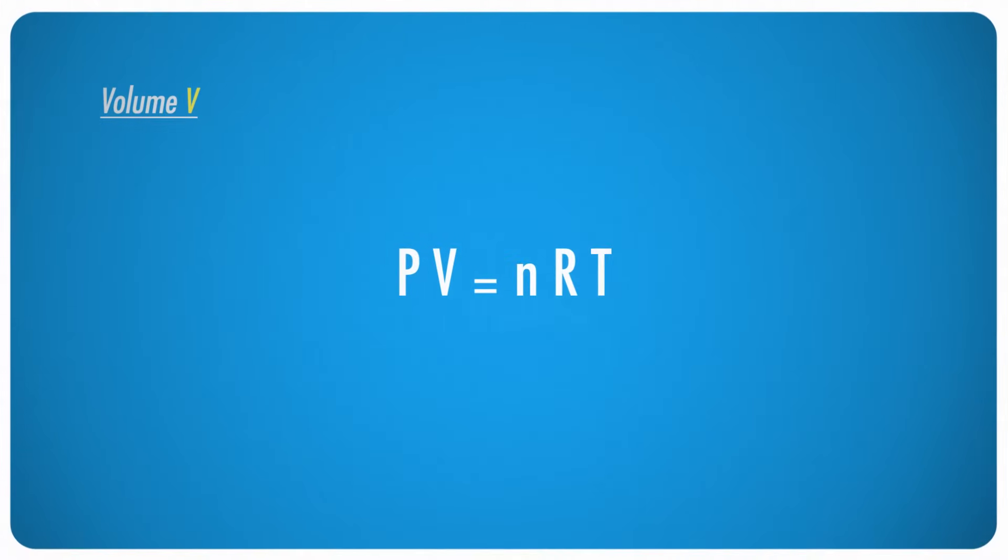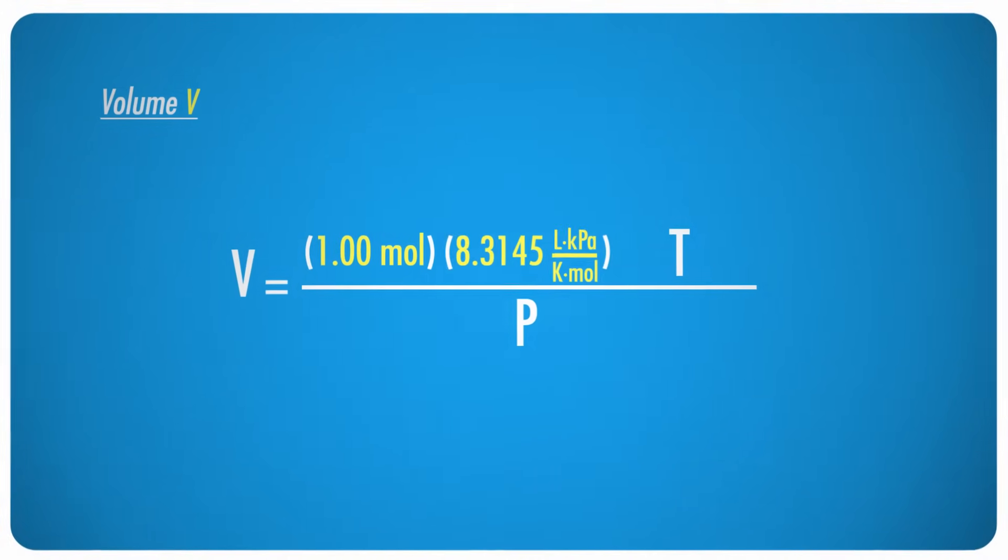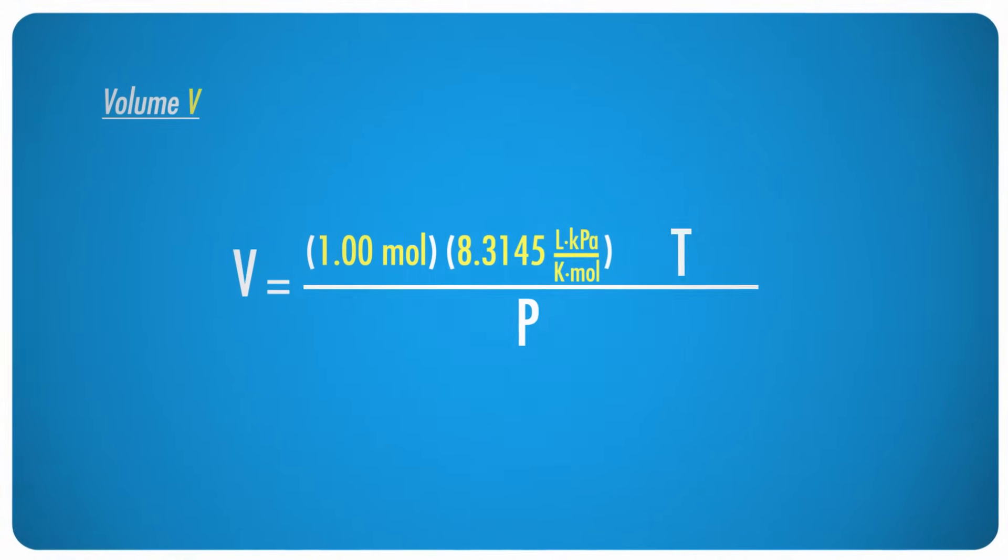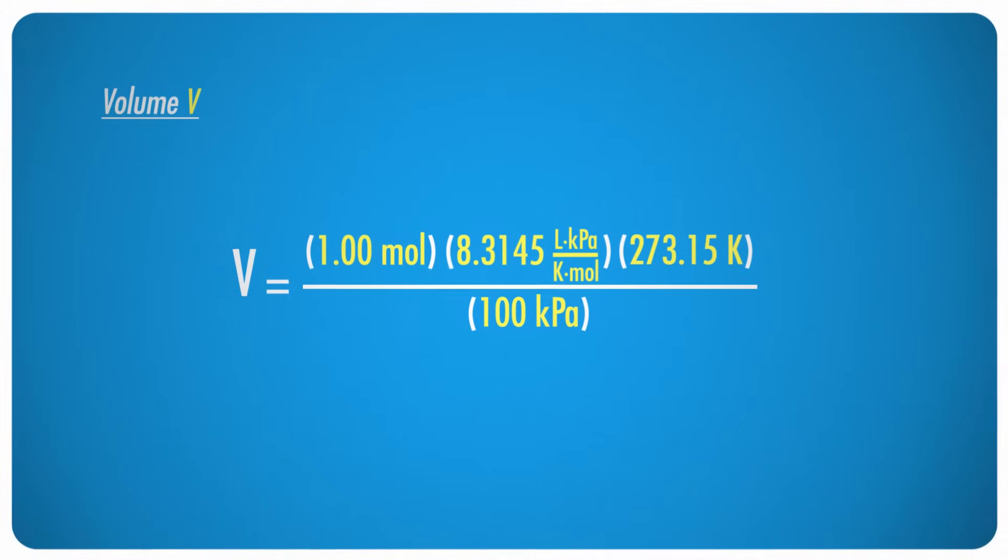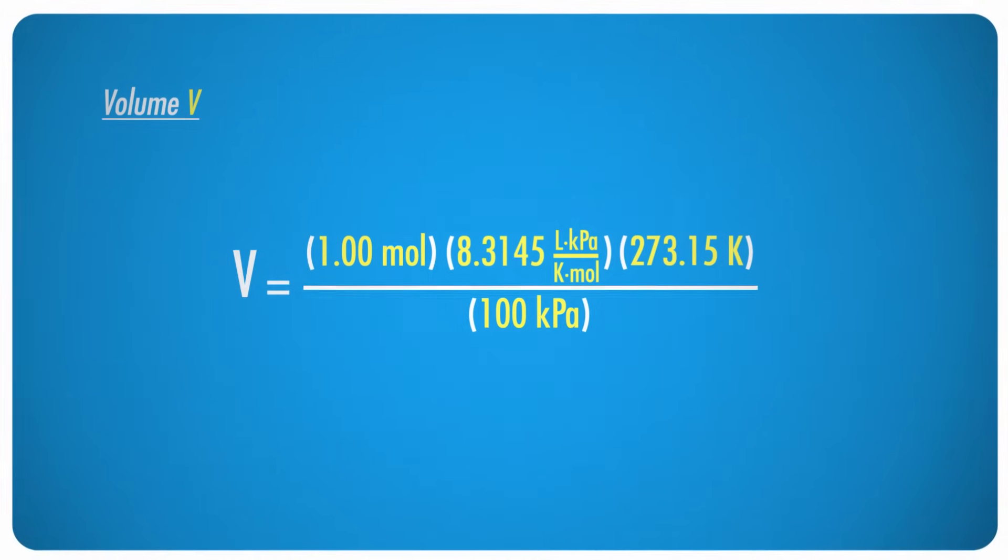So we got this fancy-schmancy new law just lying around doing nothing, let's figure out some stuff. I wonder how much space 1.00 mole of an ideal gas takes up at STP. That would be its volume, and we can calculate it like this. We know that PV equals NRT, we know that we want 1.00 mole, we know what R is, it's its constant, and since we're at STP, we know the temperature and pressure too. Plug in all the numbers, leaving the volume as a variable, since that's what we're trying to find out.